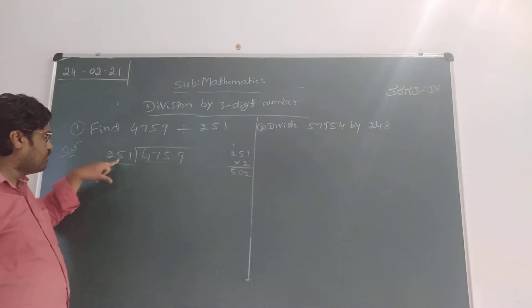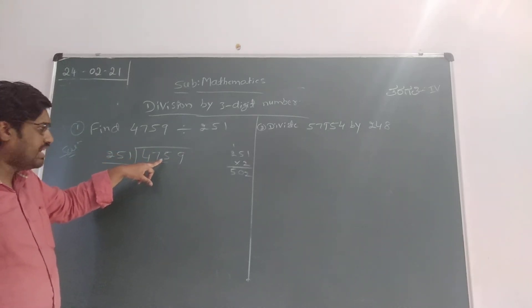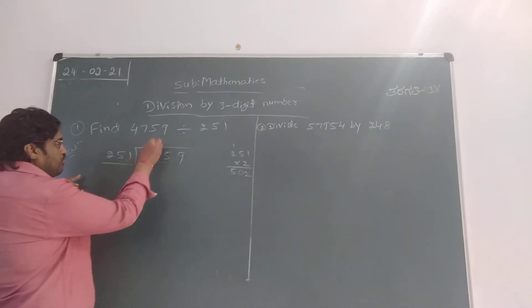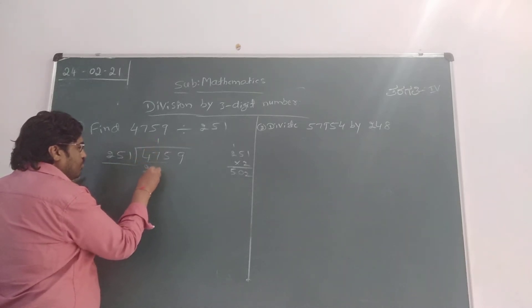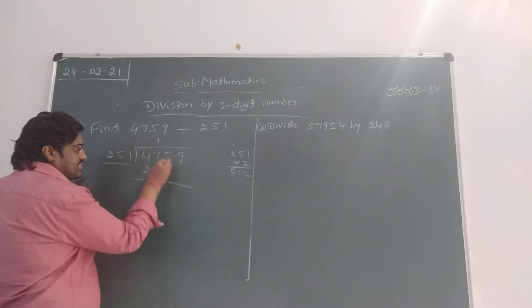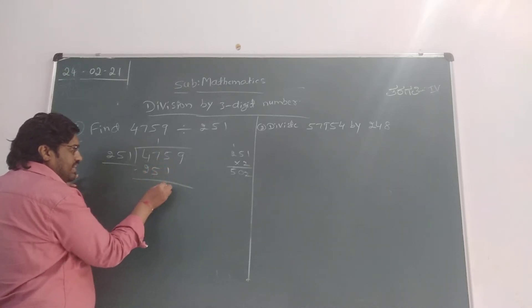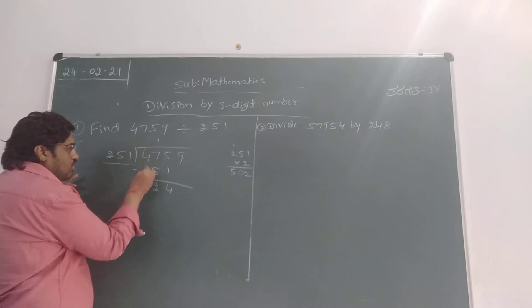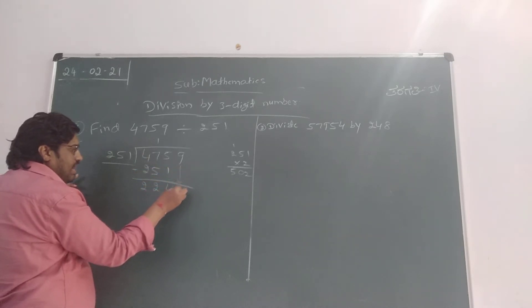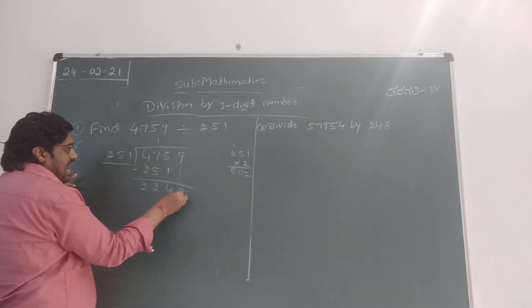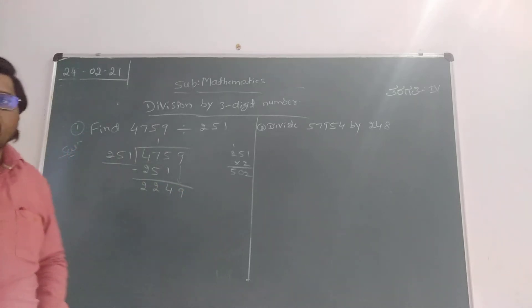We can't take 251 times 2 because we have the lesser number 475. So 251 times 1 is 251. Subtract here: 5 minus 1 is 4, 7 minus 5 is 2, 4 minus 2 is 2. And we have to write this digit, what is the digit here? 9. Now the number is 2249.